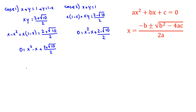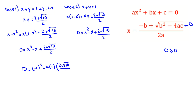Now we want to calculate each case. For x to be a real number, the discriminant b squared minus 4ac must be at least 0. In case 1, b squared minus 4ac equals negative 1 squared minus 4 times 1 times the product, which gives 1 minus 2 times 2 plus root 10, equaling negative 3 minus 2 root 10, which is less than 0. So case 1 is impossible.